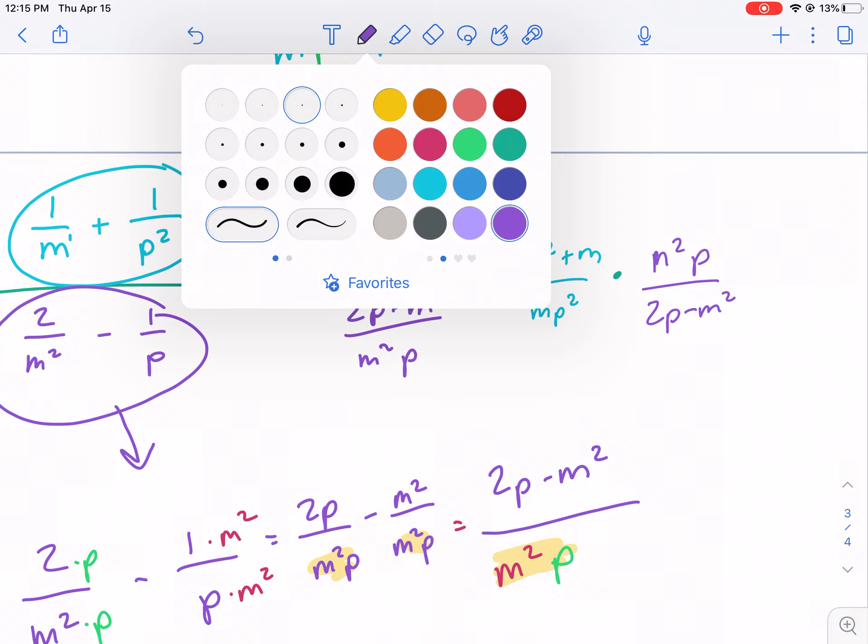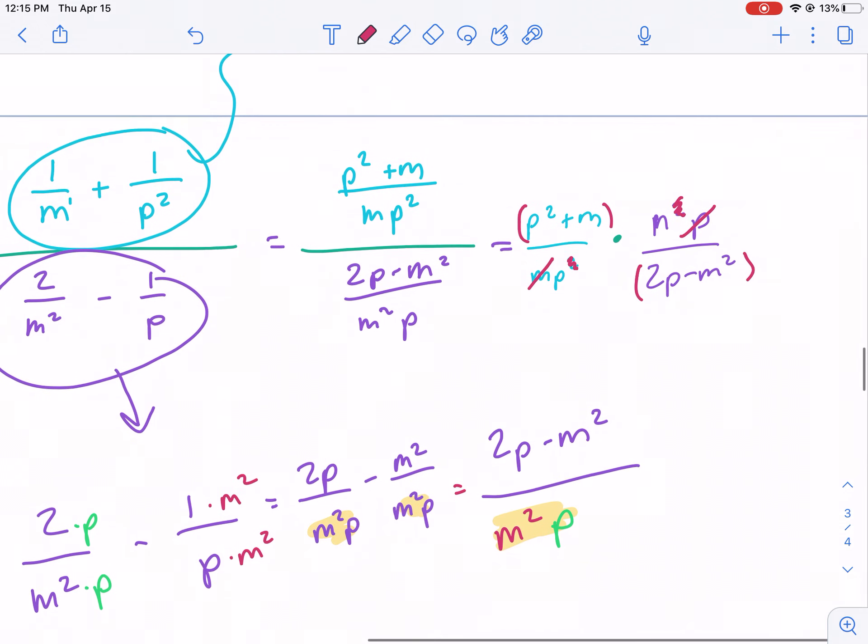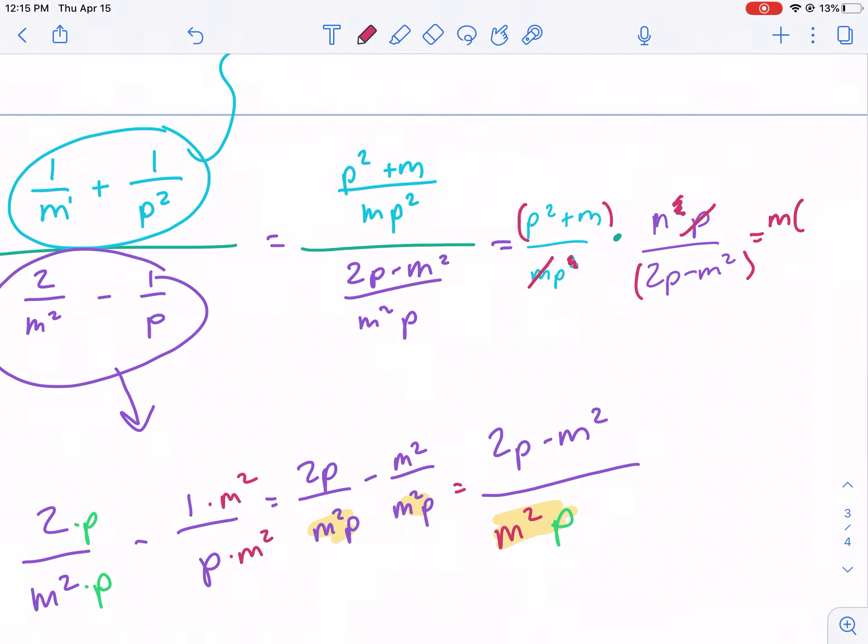Let's see if we can cross cancel anything. Now you have to be careful if there's addition or subtraction. That needs to be grouped if you're going to cancel. And since it's not the same thing, we can't cancel it. So we're going to cross off the m with one of these m, the p with one of these p's, and then we have in the numerator m times p squared plus m over p times 2p minus m squared.